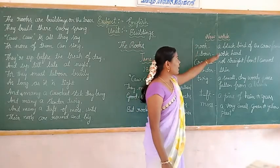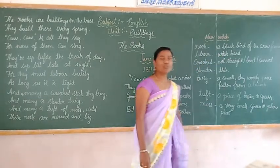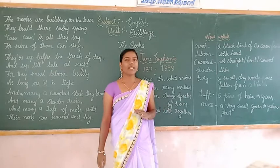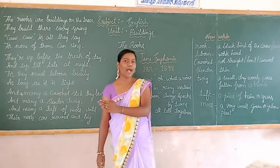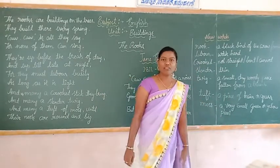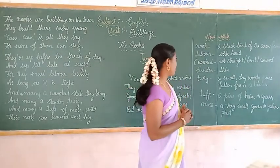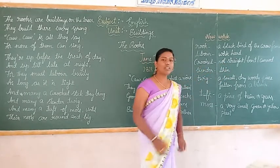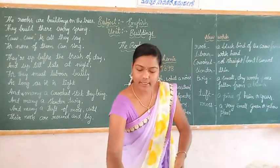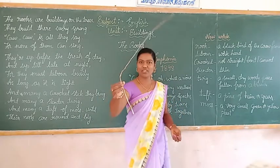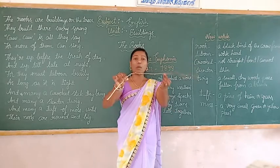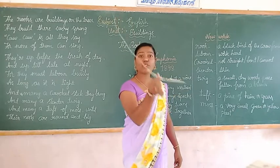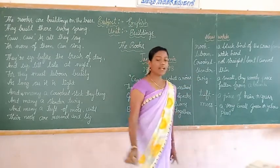Rooks — that means a black bird of the crow family. It looks like a crow. Its color is black, and it belongs to the crow family. Next word: laborious — that means to work hard. Next word: crooked — not straight, but bent. Dear students, I will show the sticks. This is straight. Is this straight? No, it is bent, curved. So this is called a crooked stick.